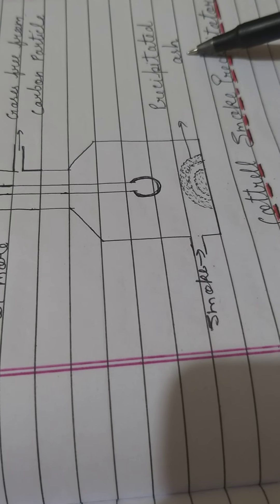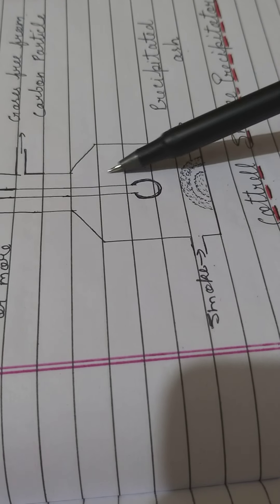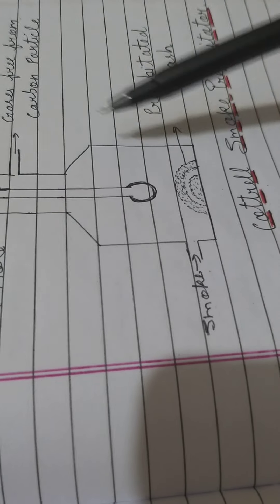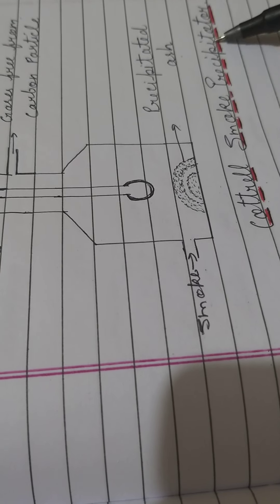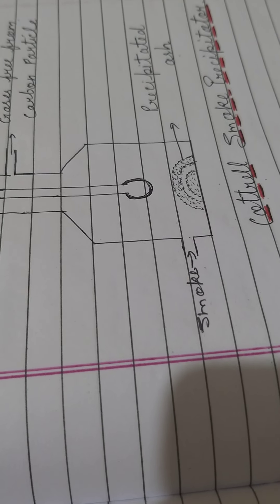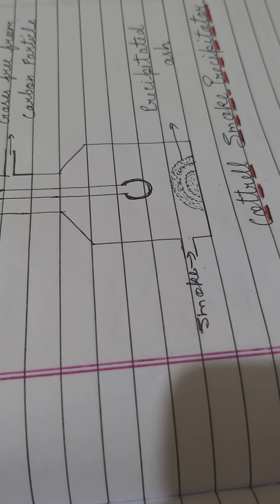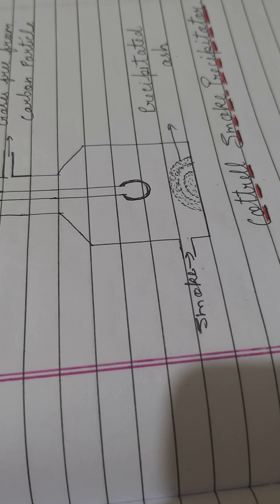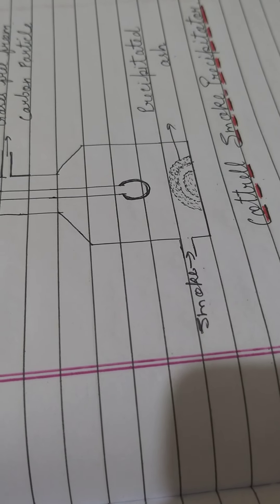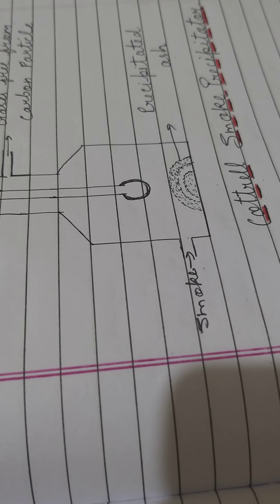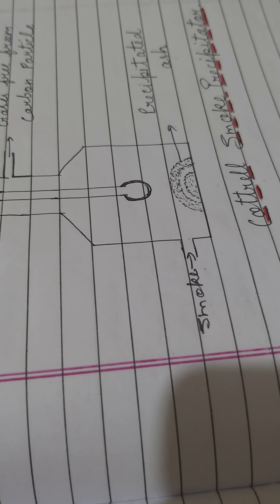Pure gases free from carbon particles come out from the precipitator. In this way, the Cottrell smoke precipitator works — it helps in the purification of air by settling down all carbon particles. That covers the complete procedure of the Cottrell smoke precipitator and all the applications of colloidal solutions. That's all for today.